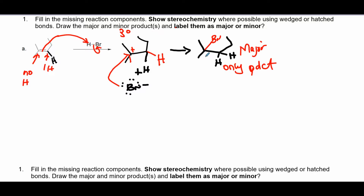No need to show stereochemistry here because this carbon is symmetrical — not asymmetric. You have two methyl groups of the same type, and two hydrogens of the same type where H ended up. So no stereochemistry needs to be shown.